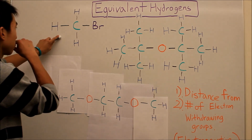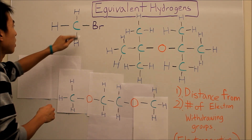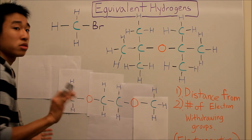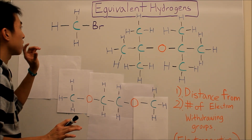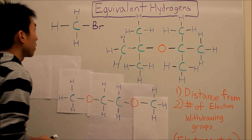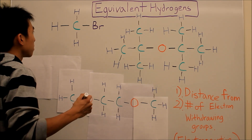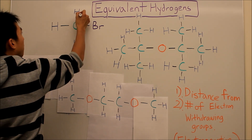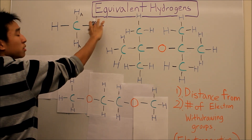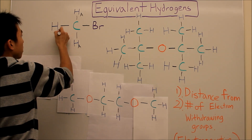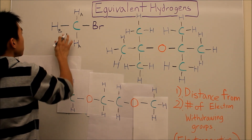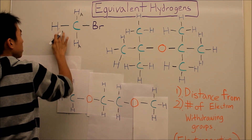So let's look at this molecule over here — it's CH3CH2Br. I want you to pause your screen and try to identify the number of groups of hydrogens. So when you group them, you might have thought these two here are equivalent because they're closer to the bromine, and this one is probably in a different group because it's farther away. But the thing you have to know is that they're actually all equivalent.